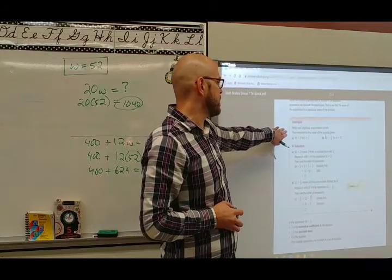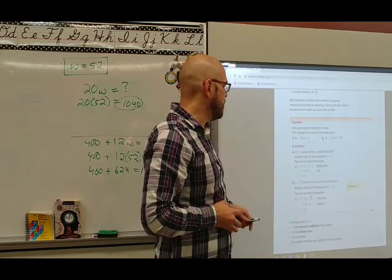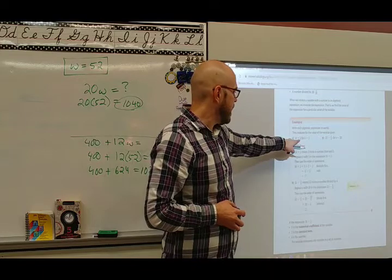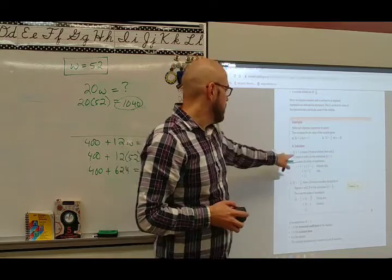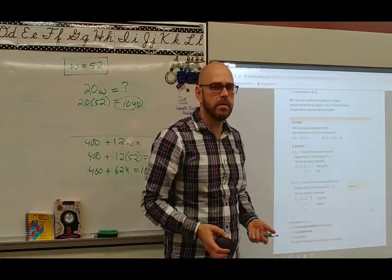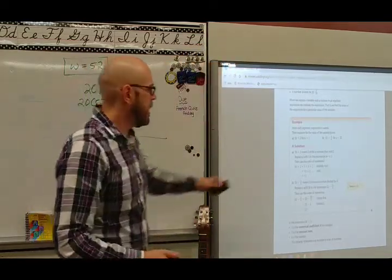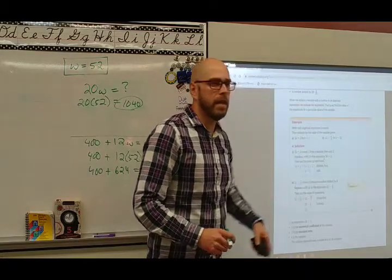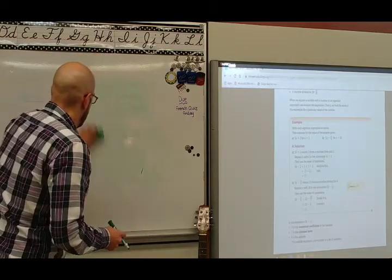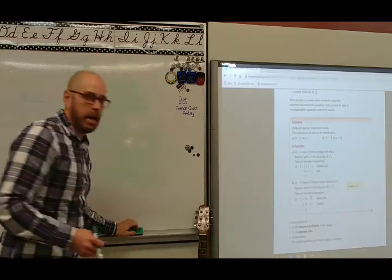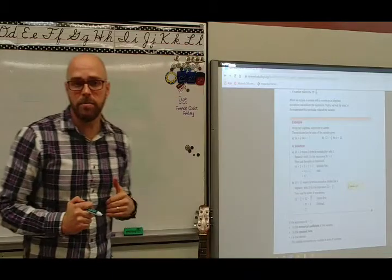Let's take a look here. It says, write each algebraic expression in words. Please be quiet. It says, then evaluate the value of the variable given. So it says, 5k plus 2 for k equals 3. And it says, please write it in words. Well, this means 5k. That's 5 times a number. 5k is 5 times a number. Then it has plus 2. So if I said 5 times a number, then add 2. So let's practice this on our boards. I'm going to give you an equation. I'm going to ask you to say it. Then I'm going to say an equation and get you to show it to me on your boards.